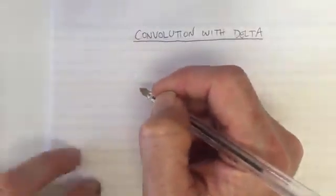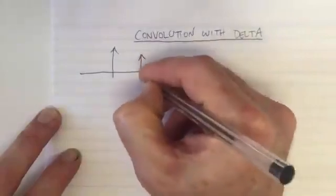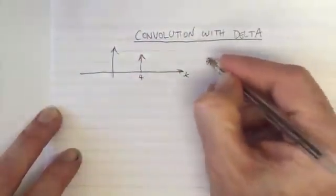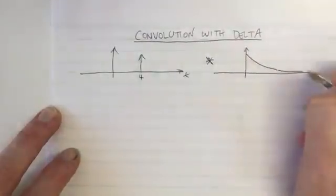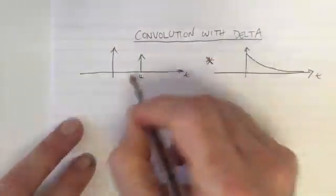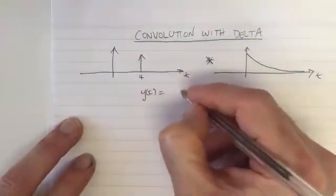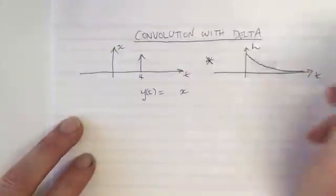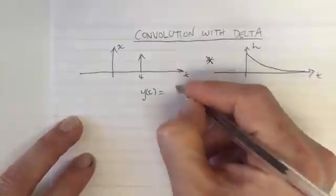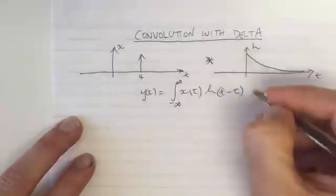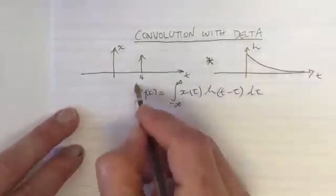Let's discuss convolution with a delta function. Here's an example delta function at time equals 4, and we're going to convolve that with a function. These are two time domain functions. The convolution formula says the output equals the integral from minus infinity to infinity of x(tau) times h(t minus tau) over tau, where x and h are our two functions.